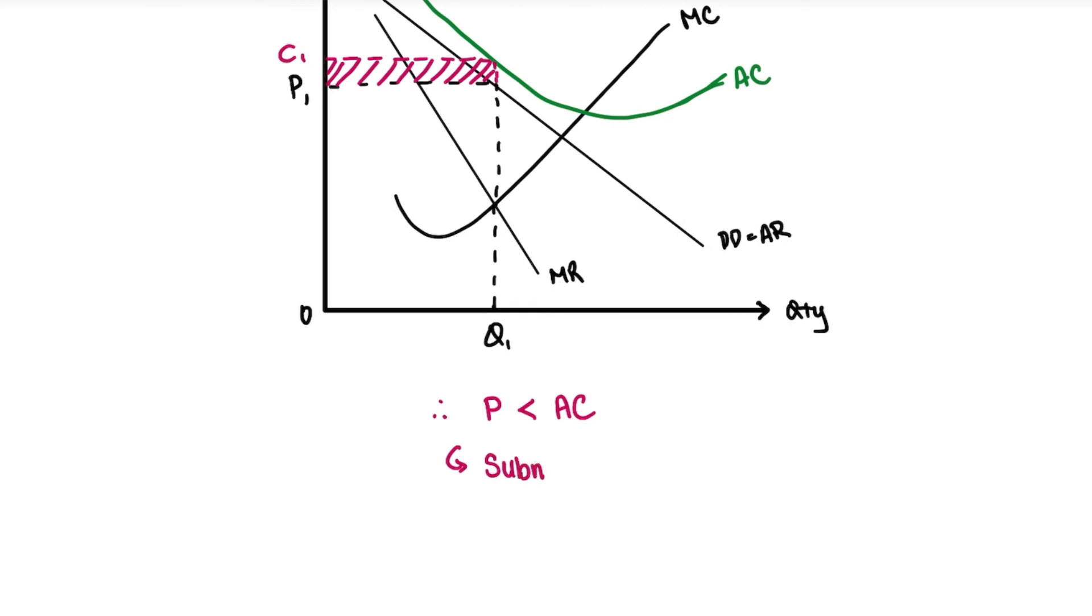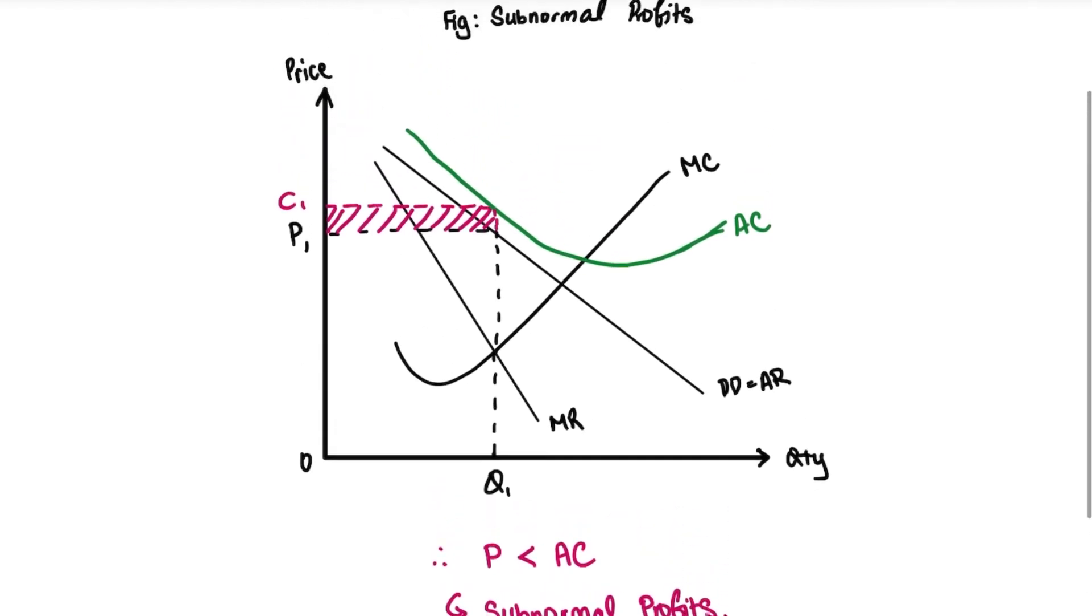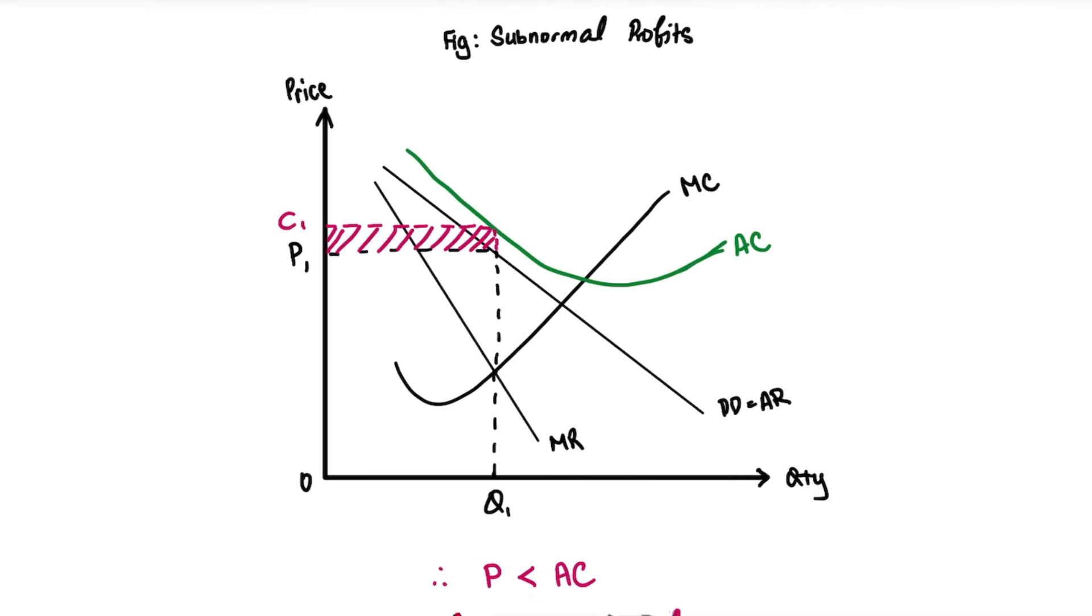We are at a case where we are earning subnormal profits. So that's quite a simple part. It's always the same thing - just look for your profit-maximizing output and look for the part where this quantity will intersect your AC to find out what the price and what the cost is like.